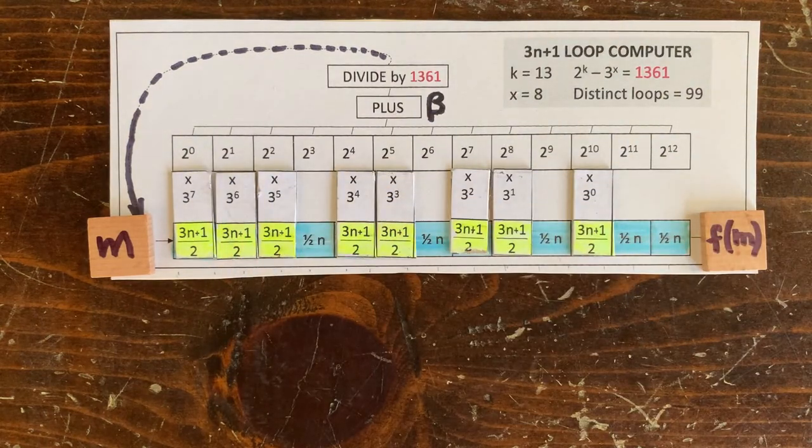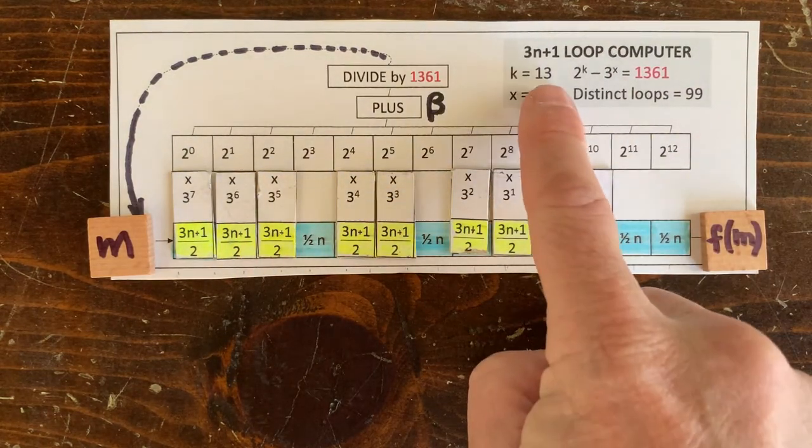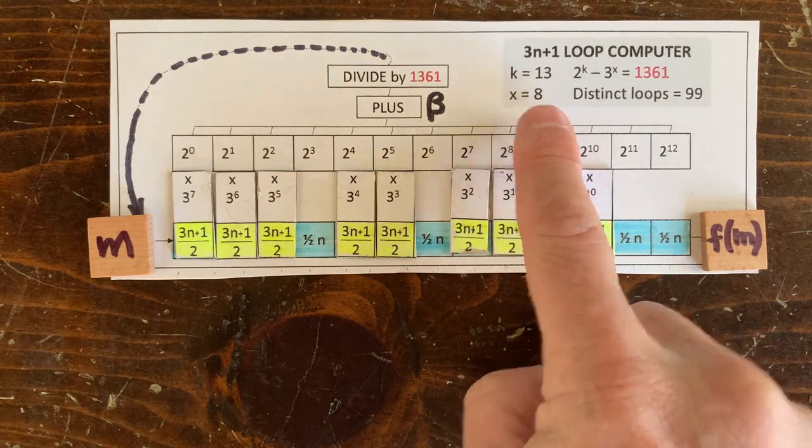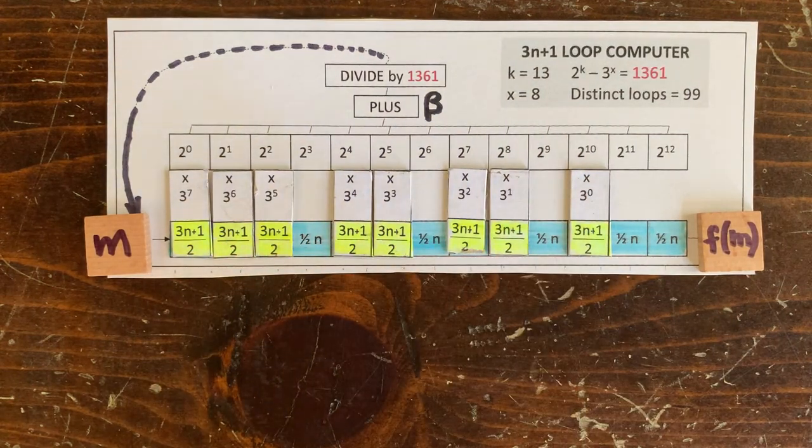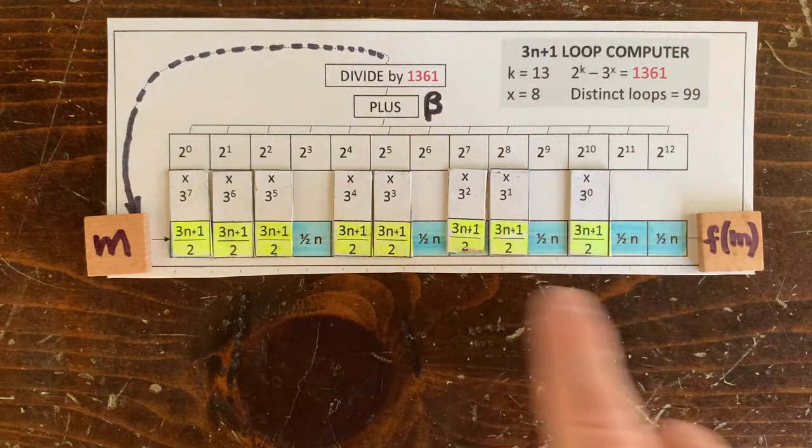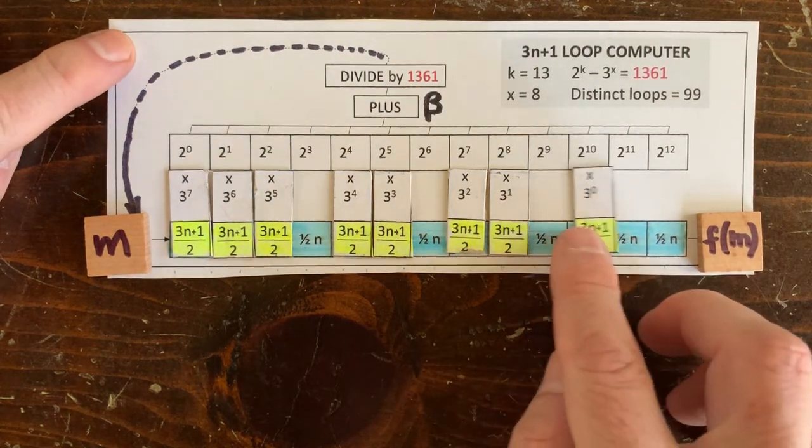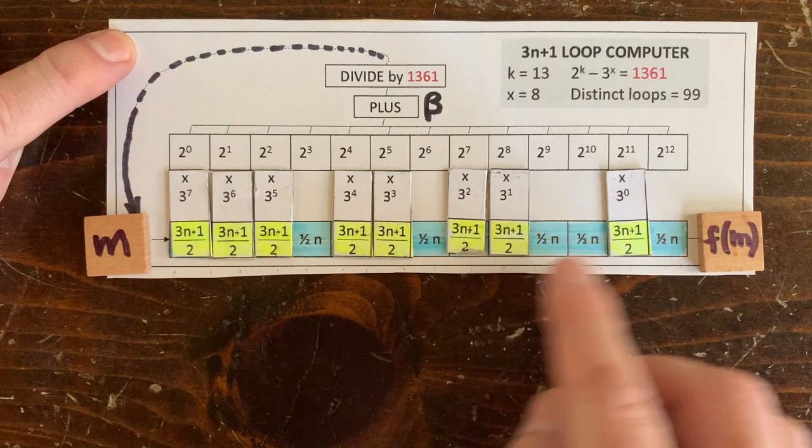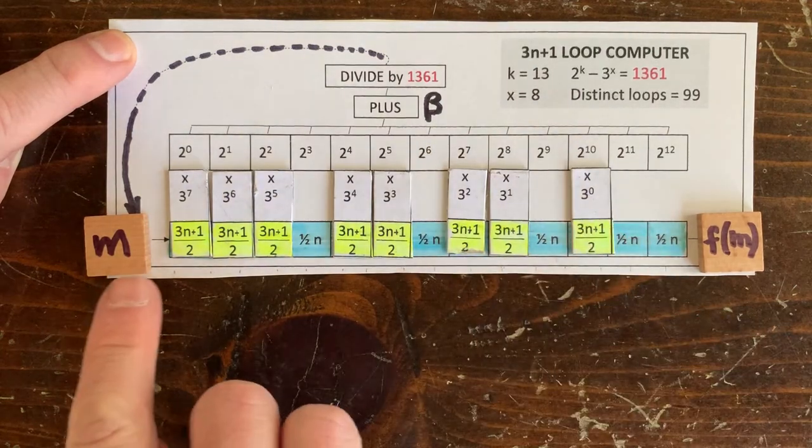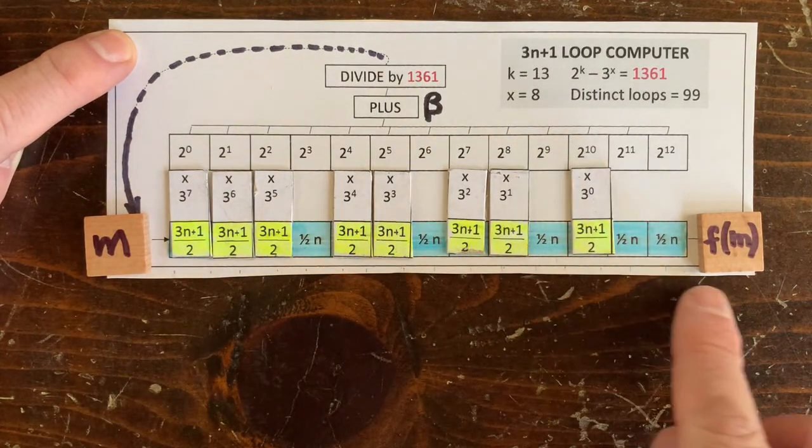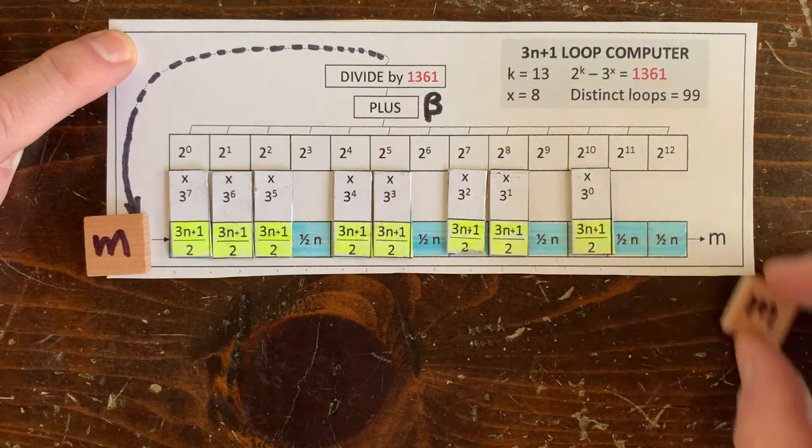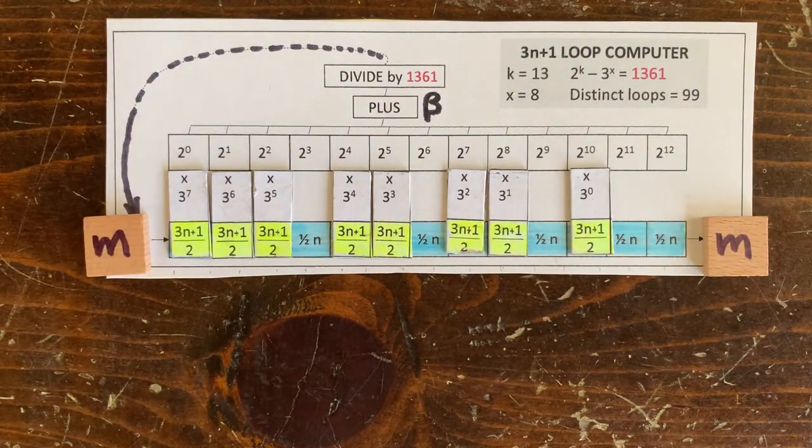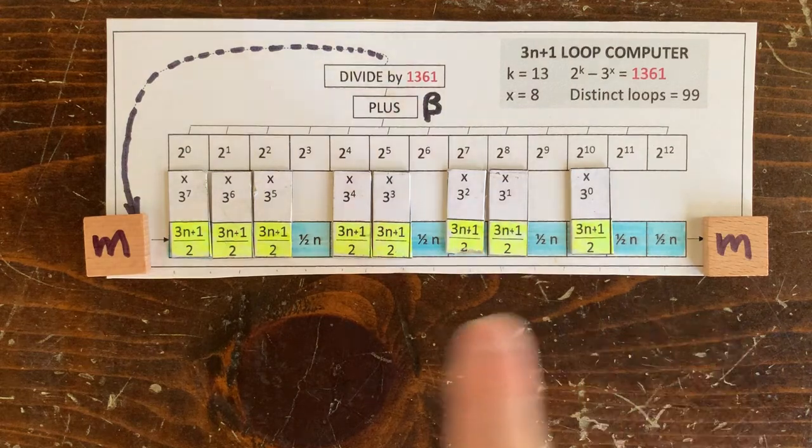So let's see, if there's a loop of length k equals 13 with x equals 8 up moves, then by moving these eight pieces around we can create all kinds of operation sequences. And for each sequence, if we stick m in here, we'll get something out here. And if we solve for m equals f of m, then we'll have a loop. The number m returns back to m after 13 steps.